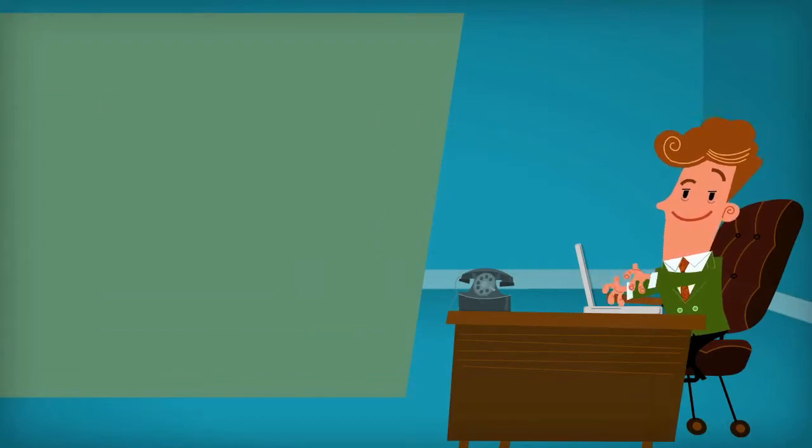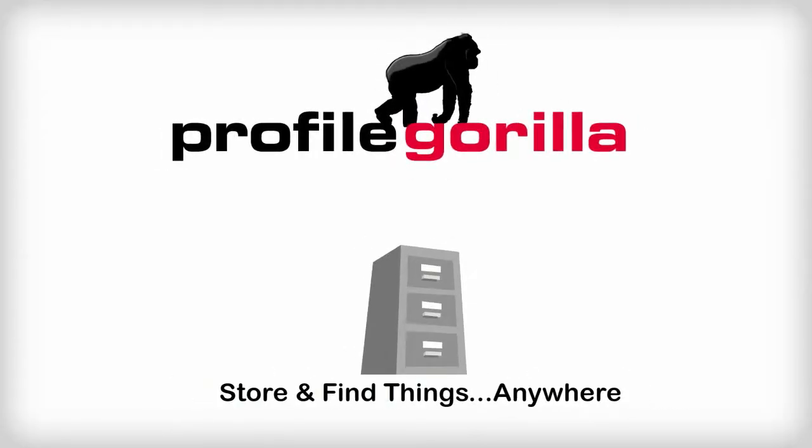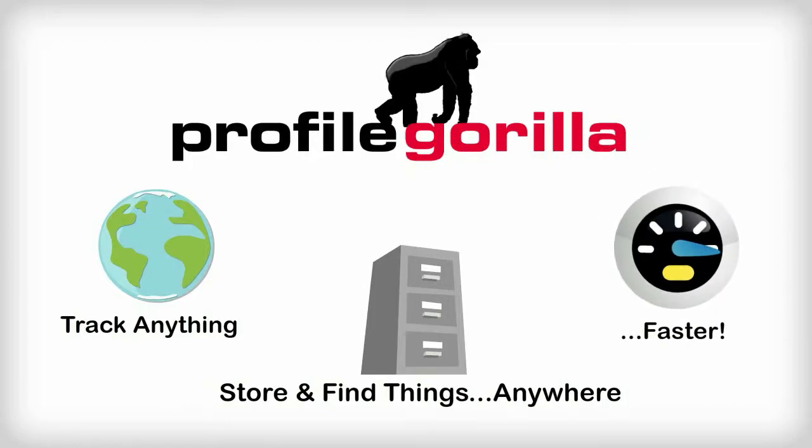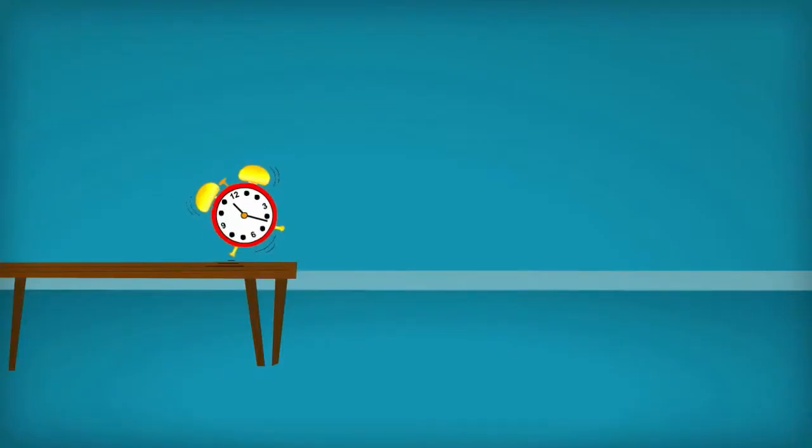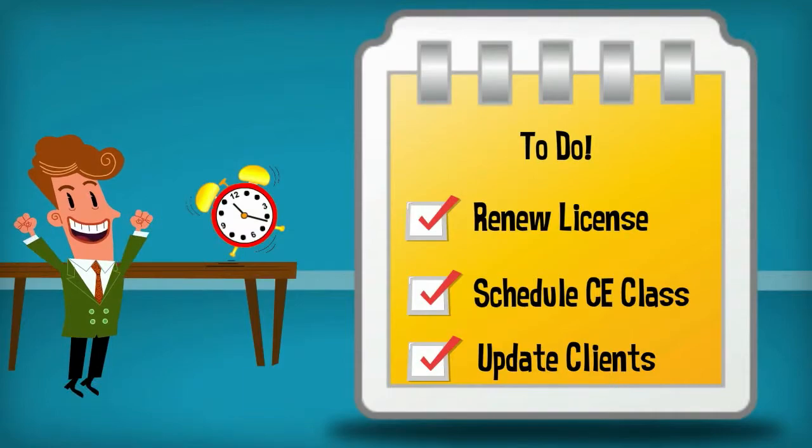Then you found Profile Gorilla. You can quickly store and find things anywhere, track anything, making your business faster. The system reminds you when things need to be done and you can send, share, and exchange information and documents with others.